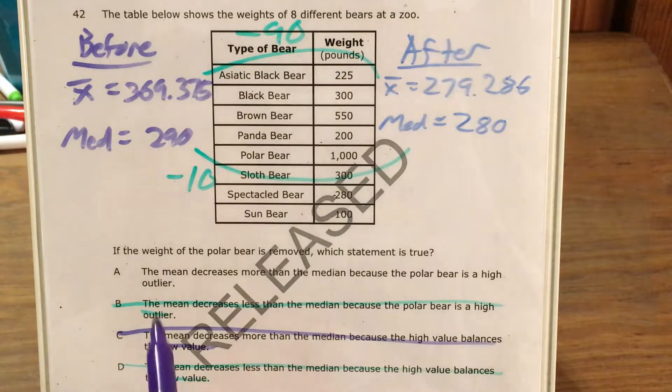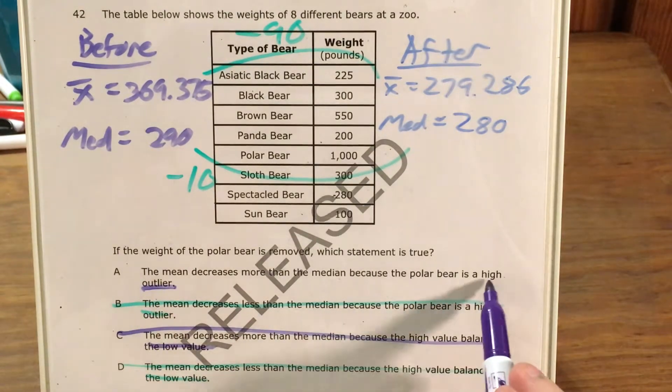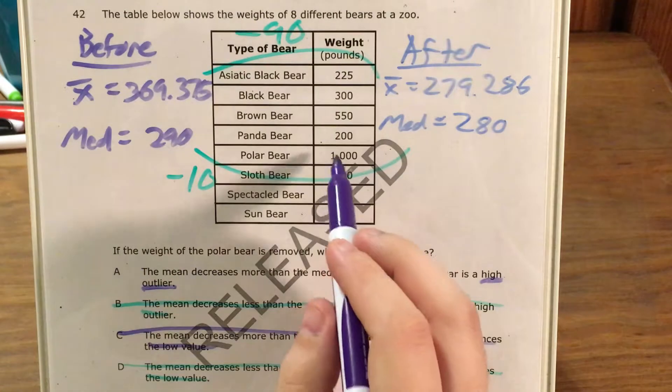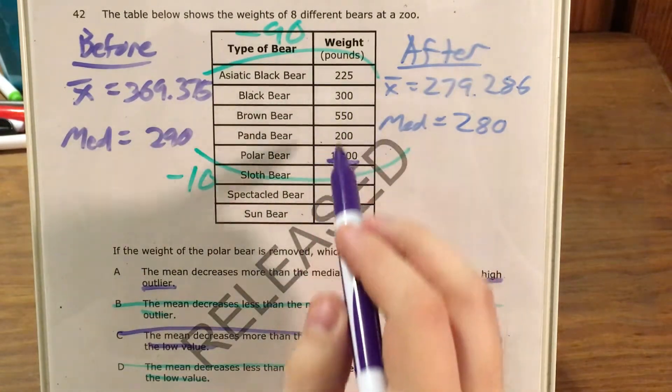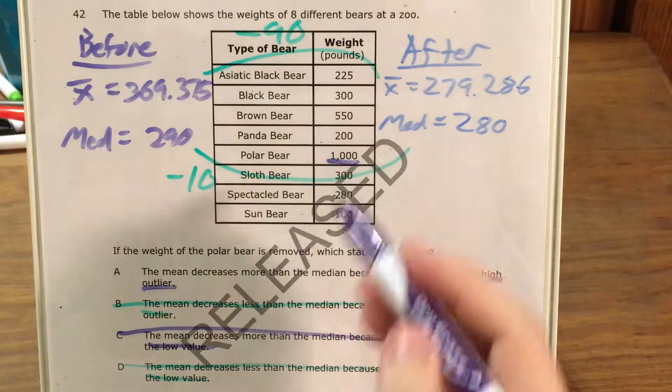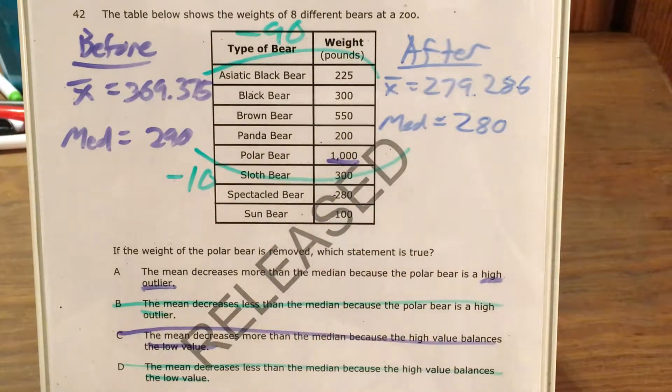Choice A is our only answer left, but I do want to talk about the idea of an outlier. So when it says the polar bear is a high outlier, that doesn't mean anything inappropriate or illegal. It just means that its weight is very far outside of the general cluster of the rest of the weights and on the high side of that. So the highest weight was the brown bear at 550 until the polar bear at 1,000 came in.